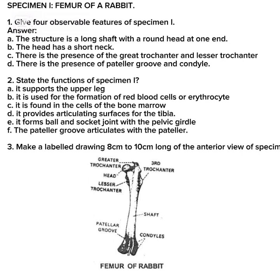State the functions of Specimen I: it supports the upper leg; it is used for the formation of red blood cells and erythrocytes; it is found in the bone marrow; it provides articulating surfaces for the tibia; it forms a ball and socket joint with the pelvic girdle; the patellar groove articulates with the patella. You may be asked to do a rough sketch of the anterior view of a femur, so try to learn how to do that sketch.